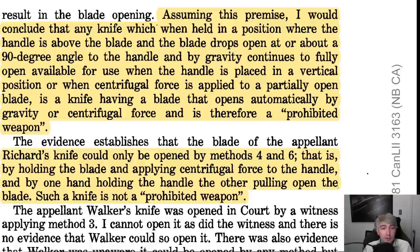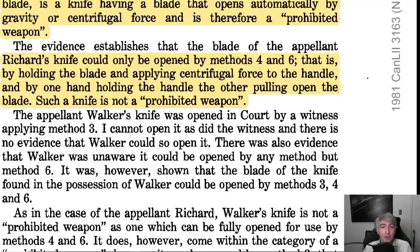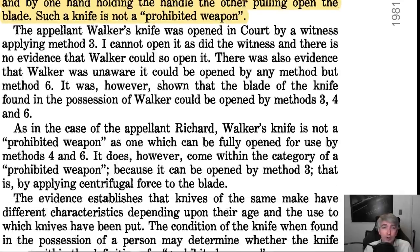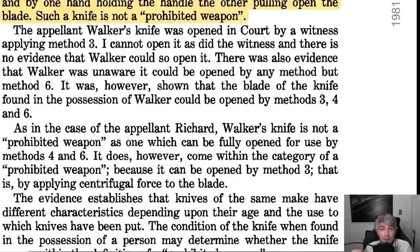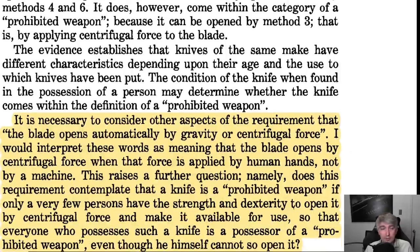Mr. Richard's knife could only be opened by methods 4 and 6 — holding the blade and applying centrifugal force to the handle, and holding the handle while pulling the blade open with the other hand. So that knife is not a prohibited weapon. Mr. Walker's knife, however, was opened in court by a witness applying method 3 — pushing the bar down and then flicking it open. The judge notes he himself couldn't open it as the witness did, and there was evidence that Walker was unaware the knife could be opened by any method other than method 6.